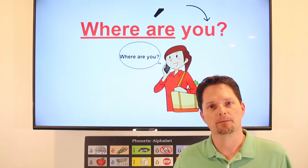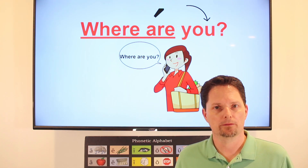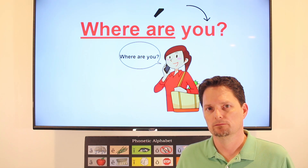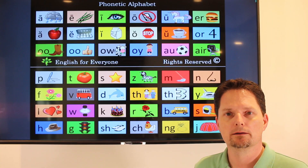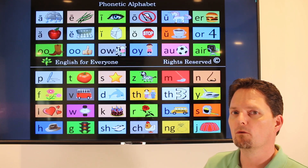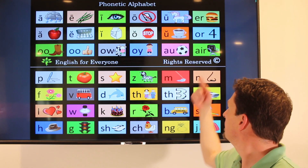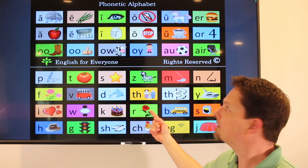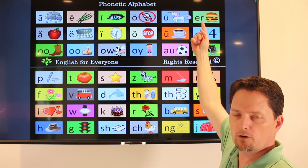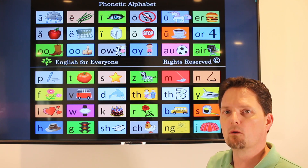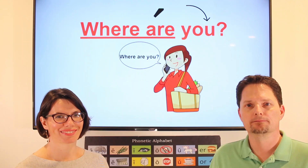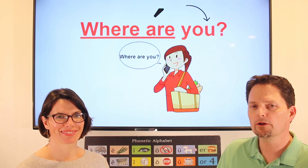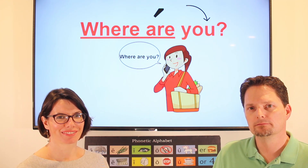When you ask the question the second time, it's different. Where are you? The intonation goes down at the end because it's an information question. Where are you? — I'm at the store. Where are you? — I'm at home. Where are you? — I'm at work.